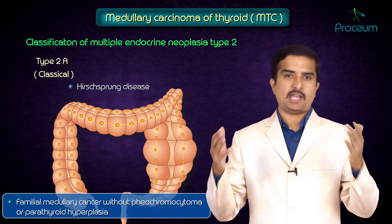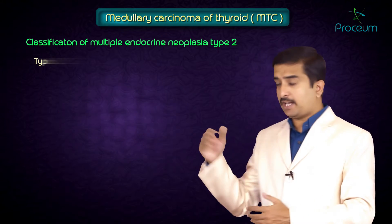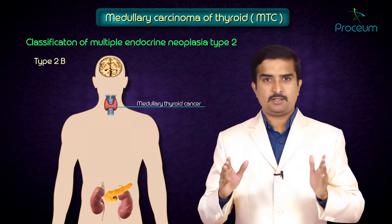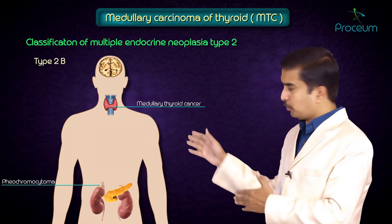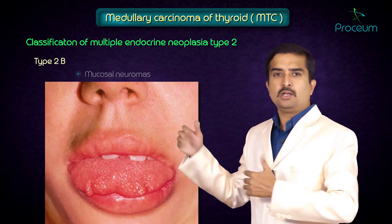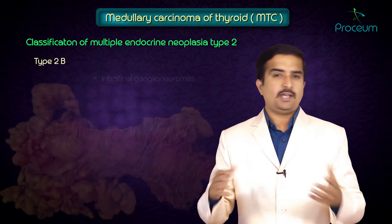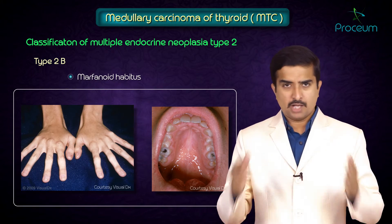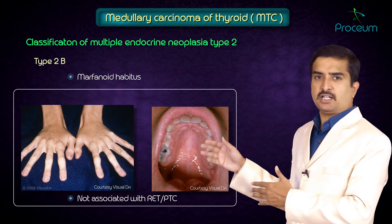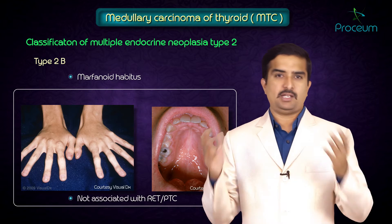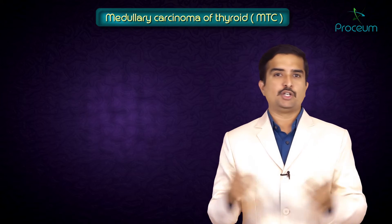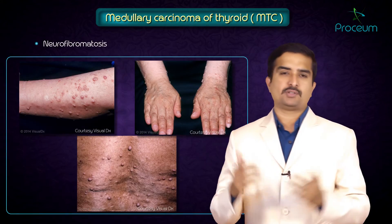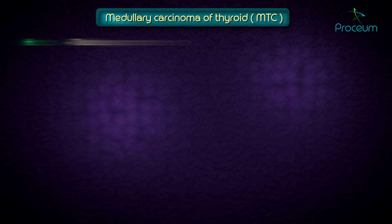In MEN2B, medullary thyroid cancer is again present along with pheochromocytoma, mucosal neuromas, intestinal ganglion neuromas, and marfanoid habitus. MEN2B is not associated with the RET/PTC rearrangement. Other related syndromes include von Hippel-Lindau syndrome and neurofibromatosis.